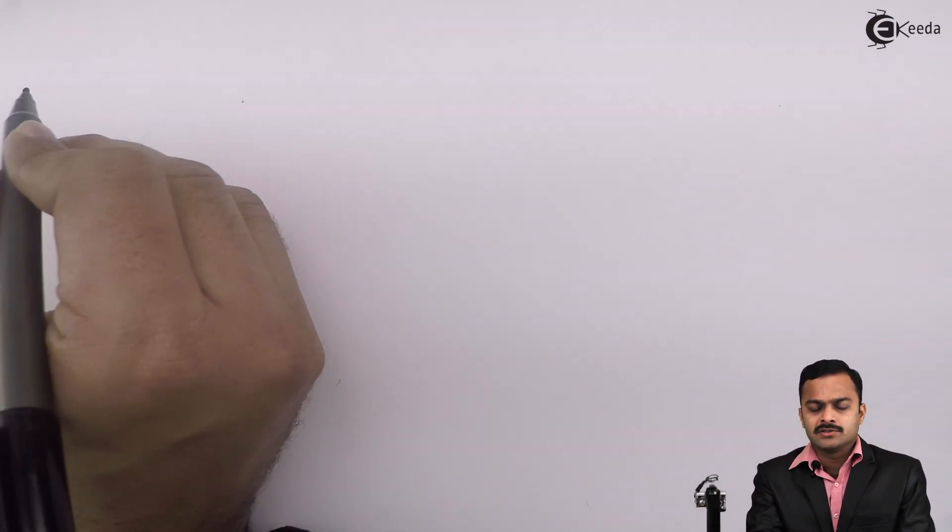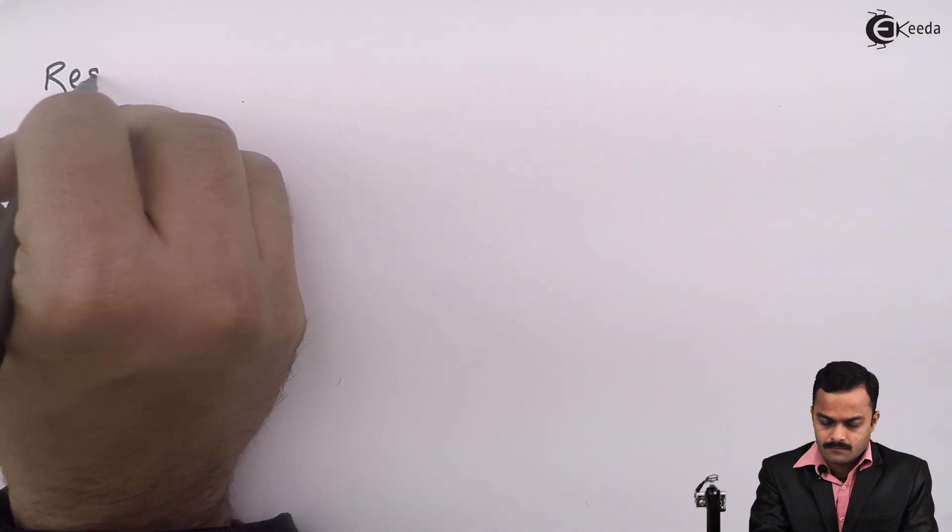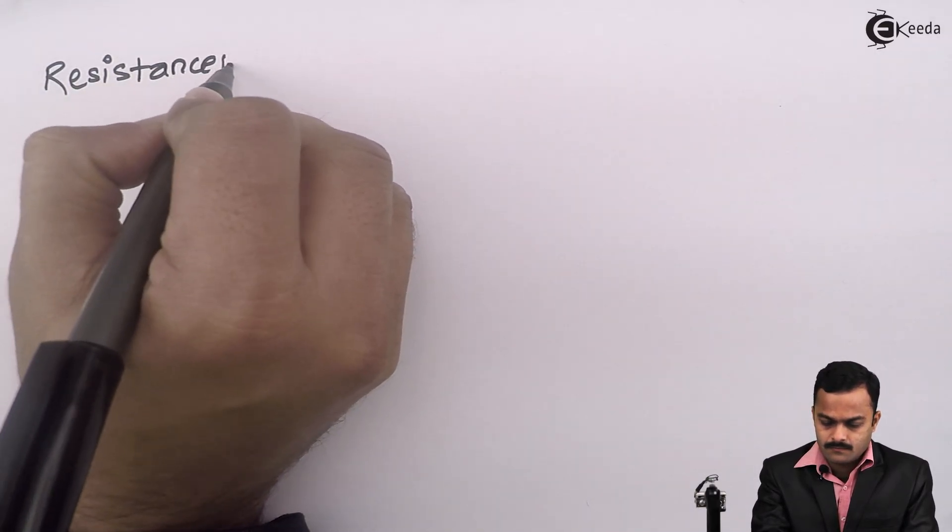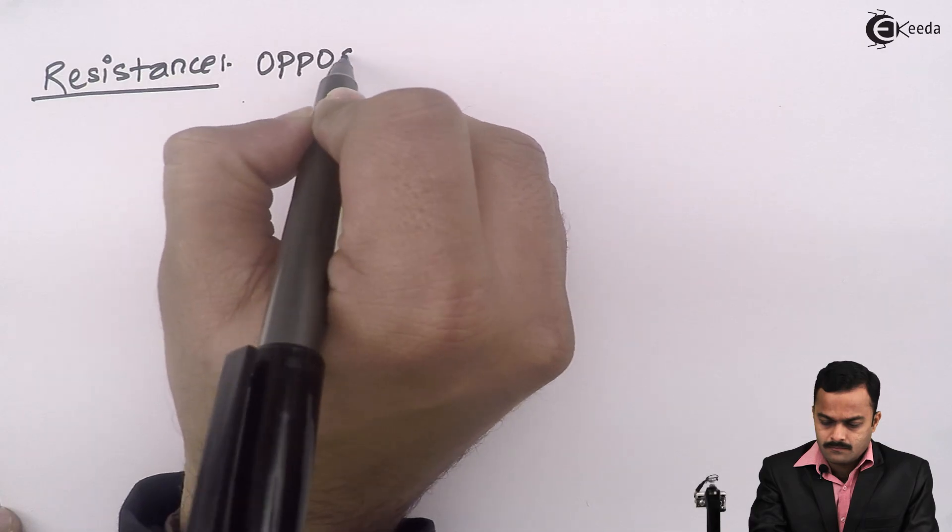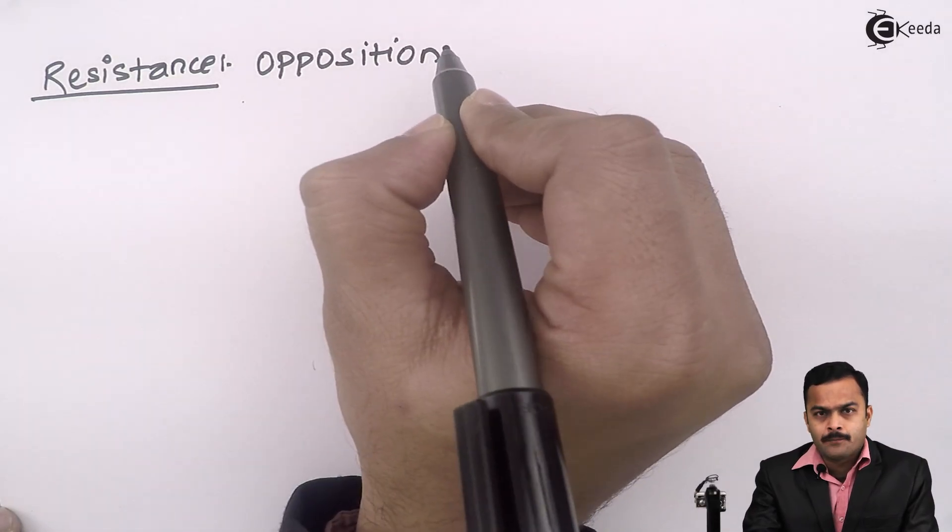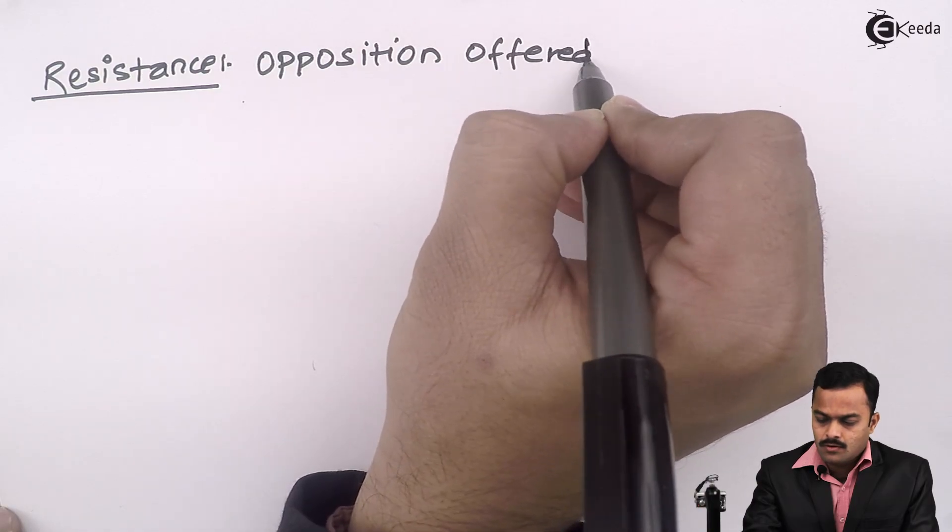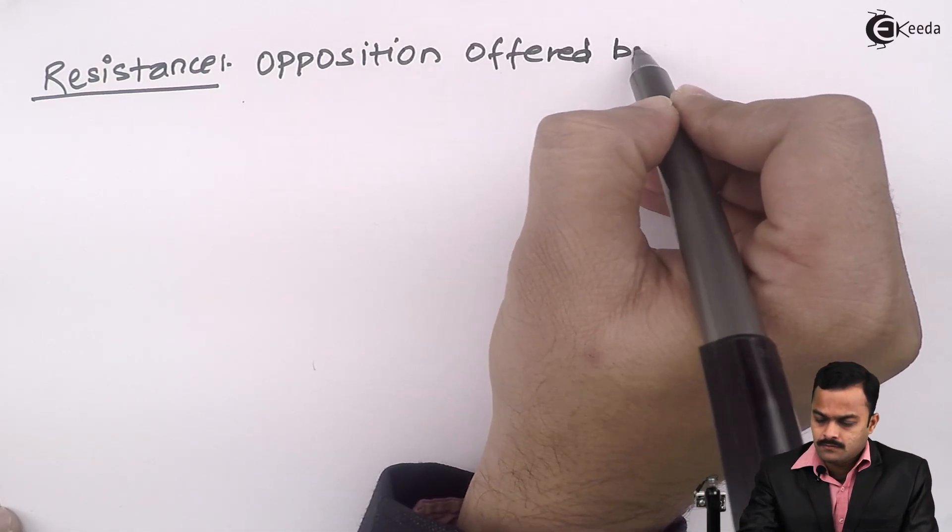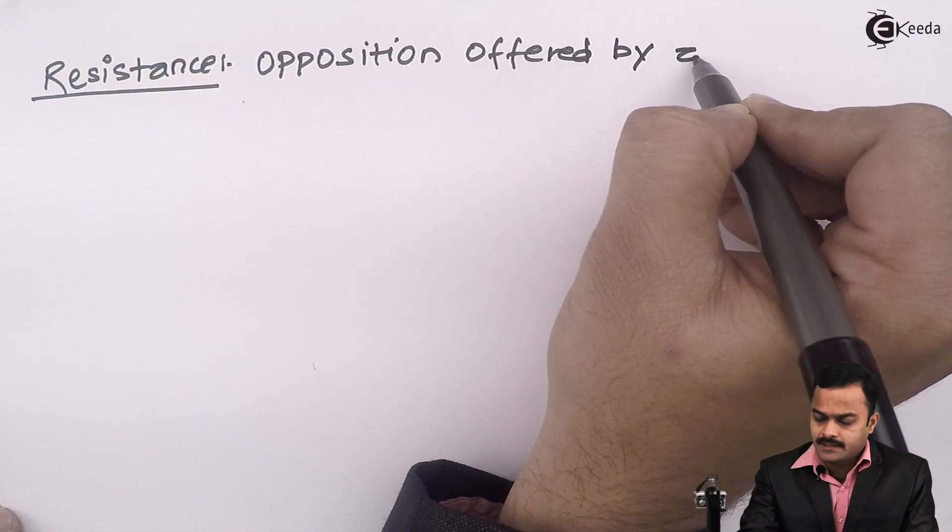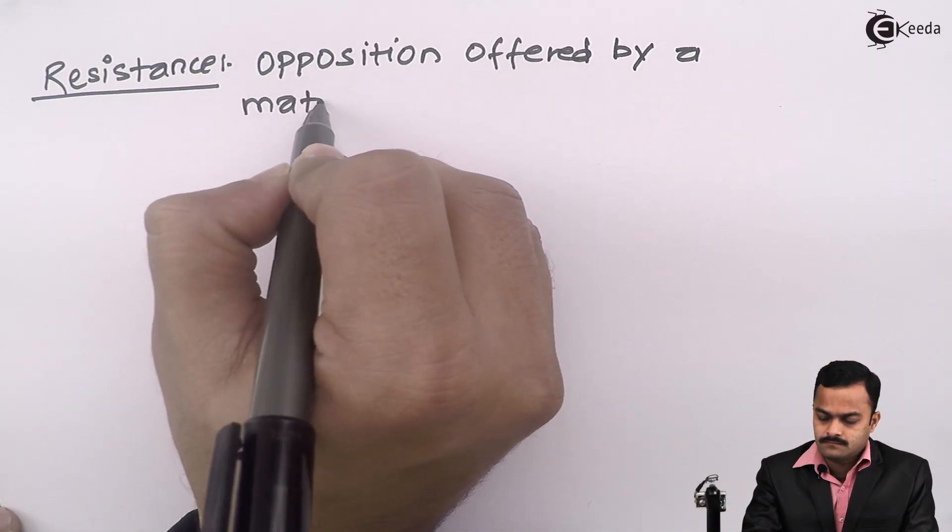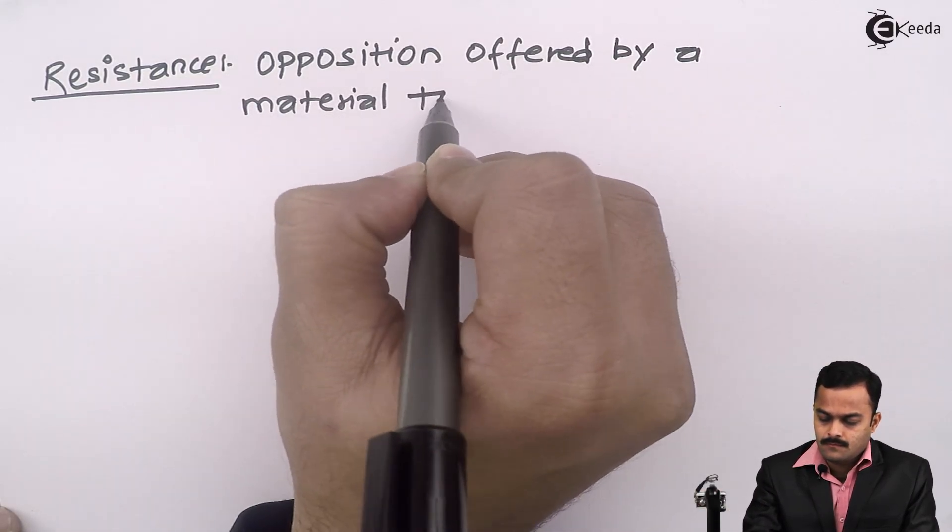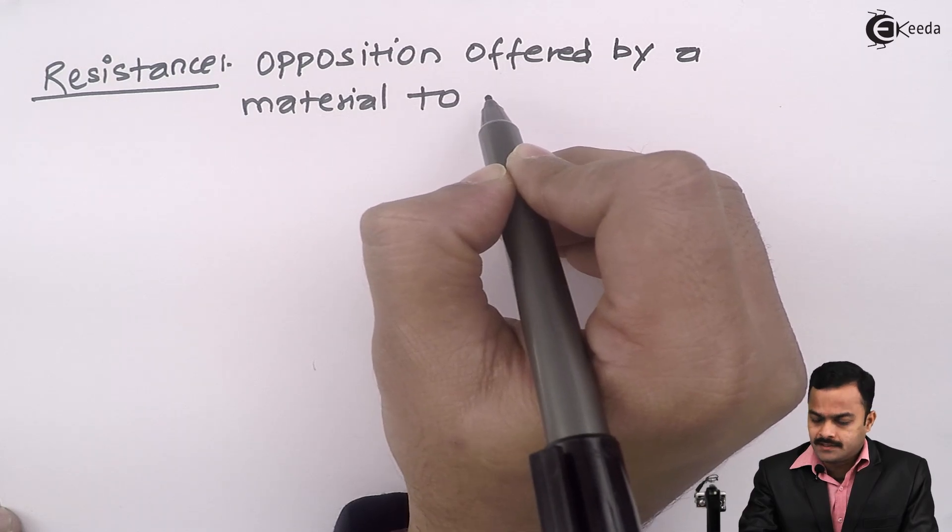Resistance is the property of a material by virtue of which it opposes the electrical current. Here I will write the definition: it is the opposition offered by a material to the flow of electrical current.